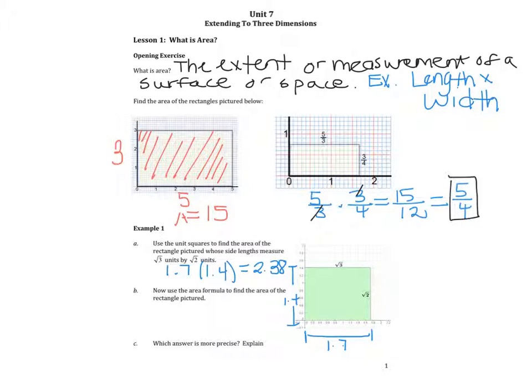Now we're being asked to use the area formula to find the area of the rectangle pictured. I'm going to use radical 2, the width times the radical 3, and that's equivalent to radical 6. And if you put that in the calculator, the decimal equivalent is roughly approximately equal to 2.5.